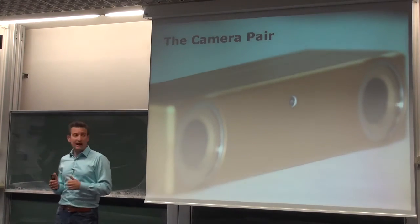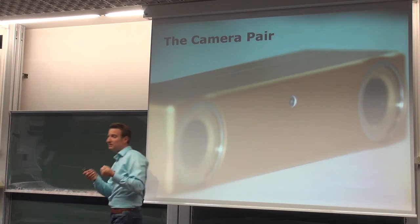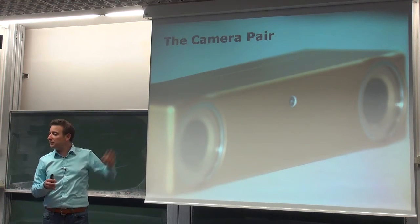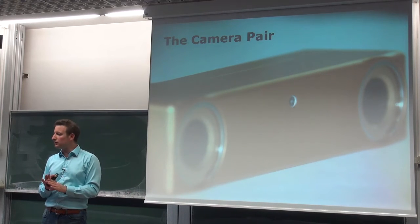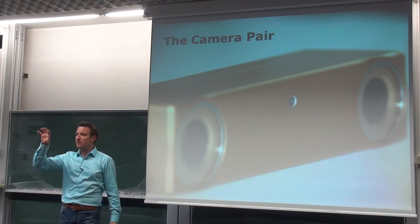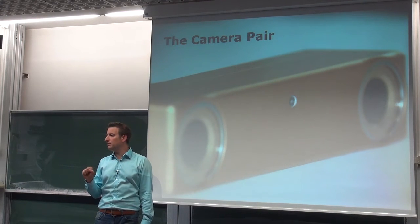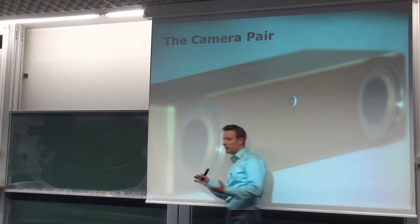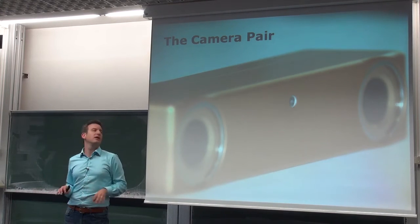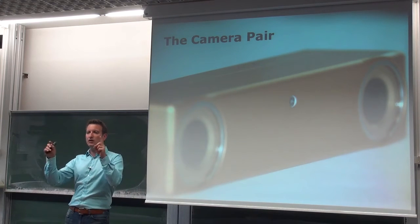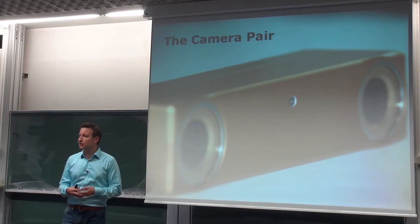We can use a stereo camera consisting of two cameras which are rigidly connected, so you can't move them independently. This is a standard stereo camera, but you can also see it as taking two images with the same camera as long as the scene is static. You don't need a stereo camera — you can move the camera and take a second image, though then the relative orientation changes. We are looking at the general case, and for now we only look at pairs of images. Later we will generalize towards multiple images.